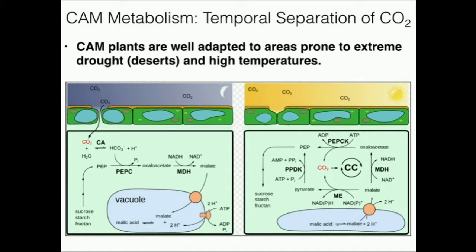Let's look at this diagram. During the night, you see CO2 come in, and there are similar enzymes to what we saw in C4 metabolism. Carbonic anhydrase is going to convert CO2 into bicarbonate. Then this enzyme, phosphoenolpyruvate carboxylase — or PEP carboxylase — is going to fix the bicarbonate carbon into PEP (phosphoenolpyruvate) to make oxaloacetate. Then oxaloacetate is going to be reduced by malate dehydrogenase to malate. Notice that malate is then put into a vacuole — so at night, we should have a vacuole jam-packed with malate.